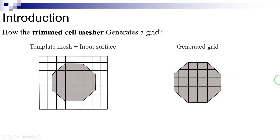Therefore, the trim cell mesher, with its hexagonal cell topology and the ability of the trim cell approach to easily accommodate a wide range of arbitrary geometries, generates a Cartesian mesh which is typically of high quality and presents high orthogonality to the mean freestream flow. However, in order to generate a high-quality Cartesian mesh using the trim cell mesher, it is necessary to have some knowledge about some basic features of this mesher, which are presented in the following sections.